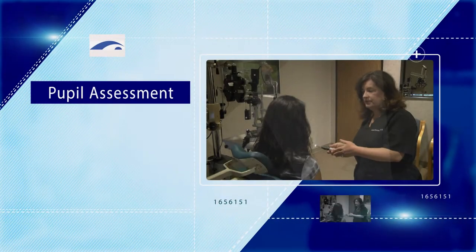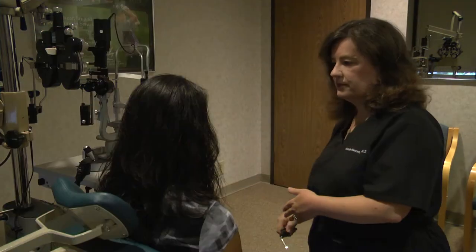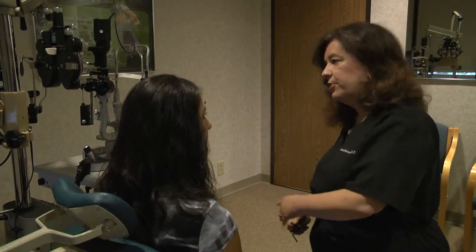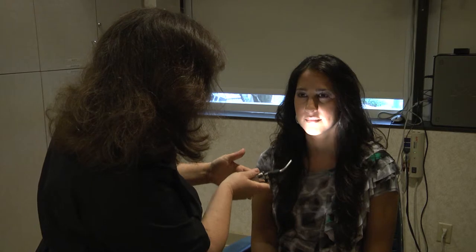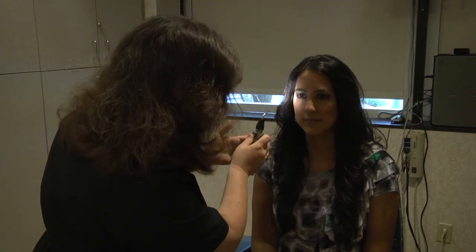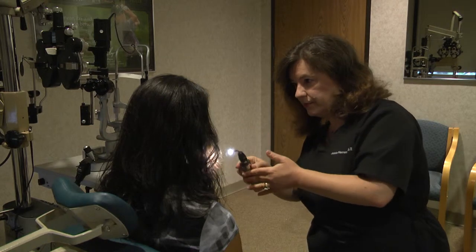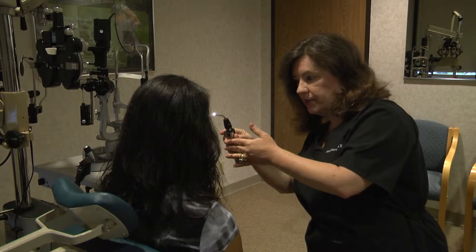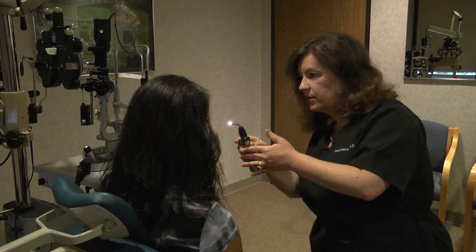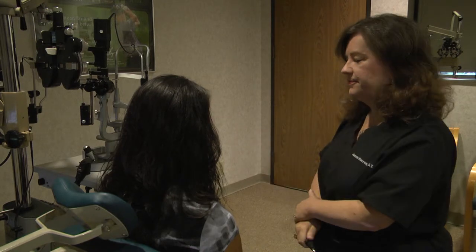After this, an assessment of pupils will be done, checking the size, shape, and equality of the pupils, along with the reaction of the pupillary reflexes, taking extra care to rule out any relative afferent pupillary defect, or Marcus Gunn. Pupillary reflexes are assessed by direct and indirect light reflexes and with the swinging light test. If any abnormalities are detected, make sure to bring this to the physician's attention before instilling any dilating drops.